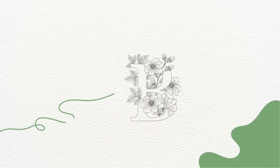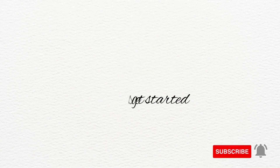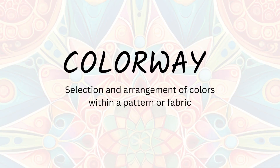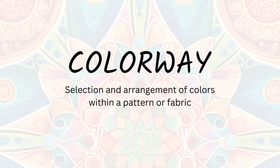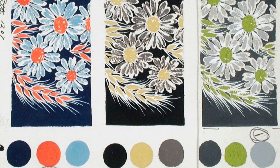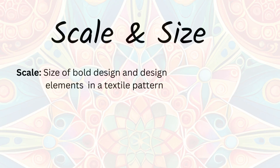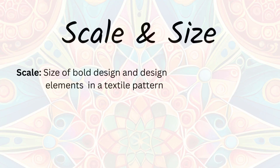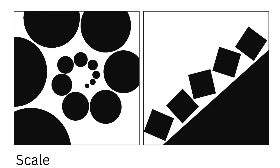Asalaamu alaykum everyone, welcome back to Innovation and Lens. Today I'll share some textile design terminologies with you. Colorway: kissi bhi pattern or fabric ke same design ke two different color options hote hain, unhye textile design ke terminology mein colorway kehte hain.